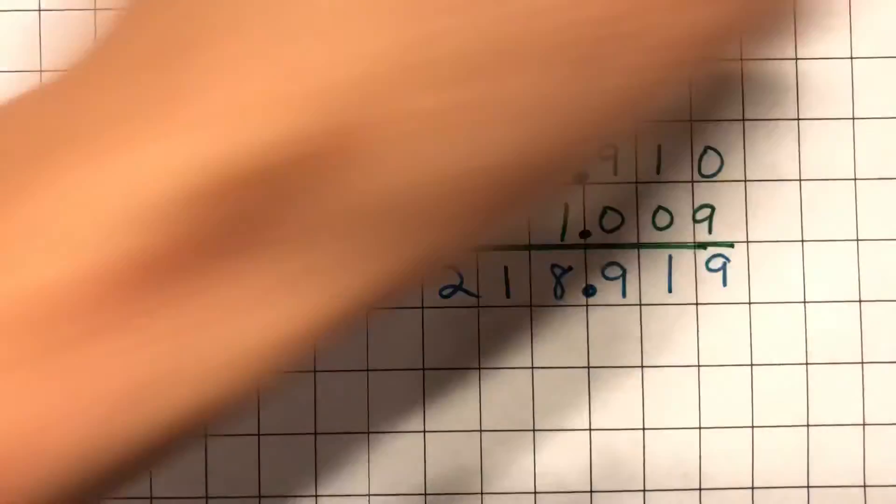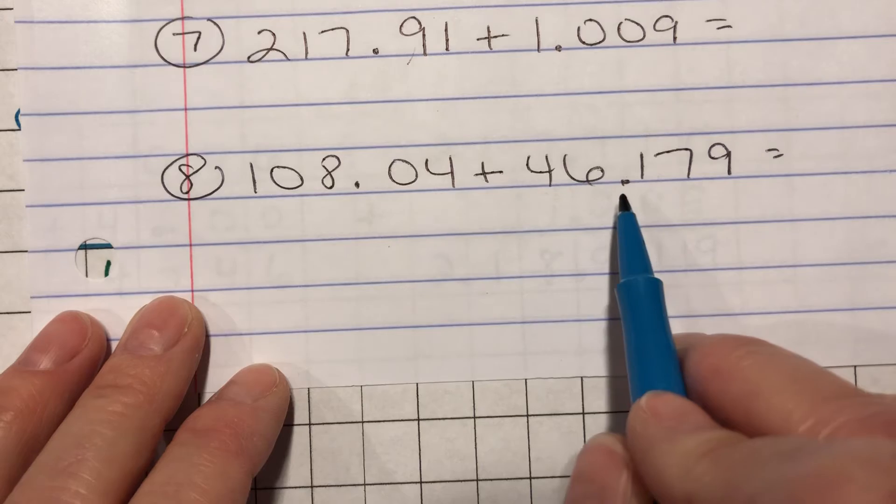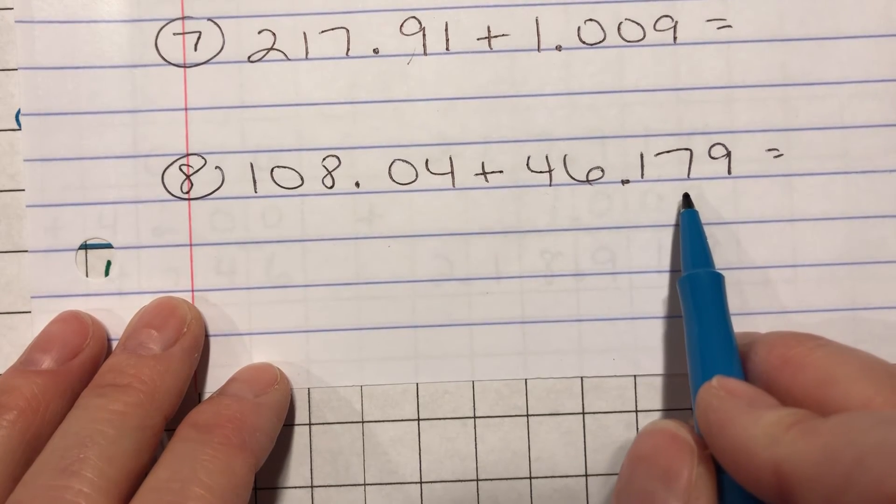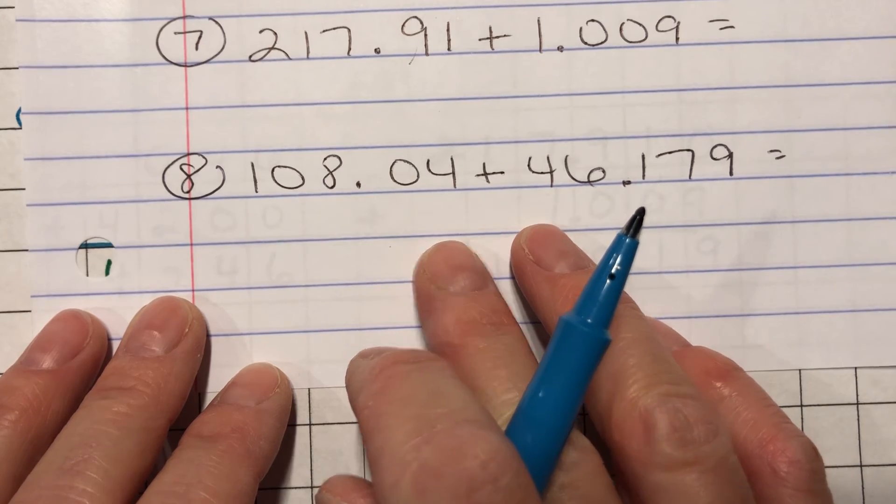Alright. It's time for the grand finale. Last one here. Number eight. I have a hundred eight and four hundredths plus forty six and one hundred seventy nine thousandths. So set that up on your grid paper and press play when you are ready.